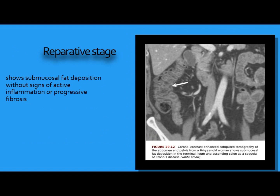Regenerative phase: there is mucosal atrophy and sub-serosal mucosal fatty deposition. This is CT — this black area is fat, indicating fatty deposition. The CT of the abdomen shows this fat representing fatty deposition, and we have a special sign.